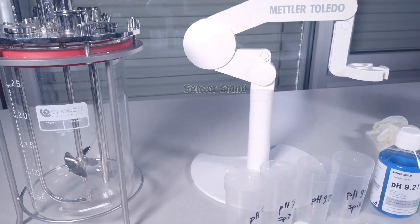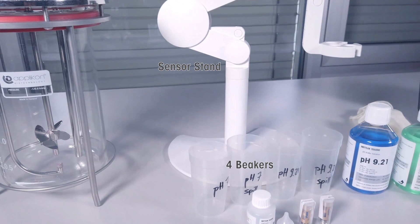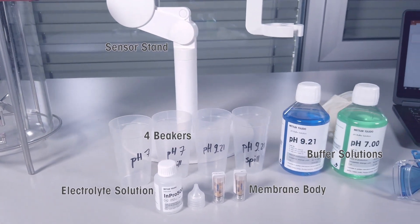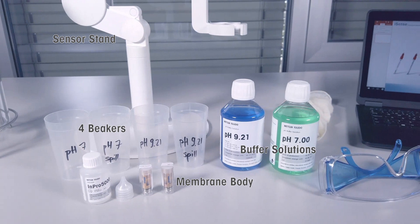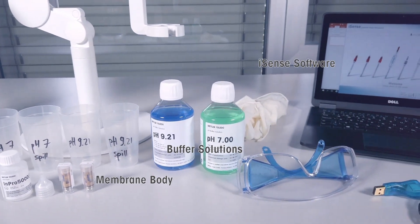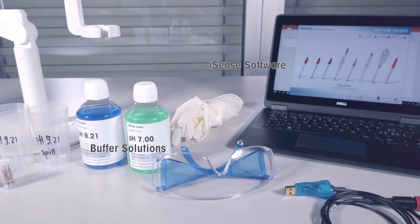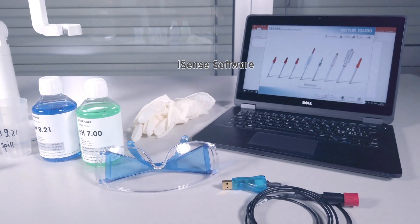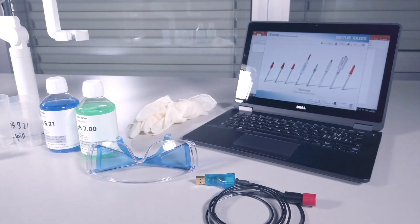To perform maintenance and calibration you will need the following: the supplied electrolyte solution, a new membrane body, Mettler Toledo pH Buffer 7 and 9.21, at least 4 clean beakers, a sensor stand, and Mettler Toledo iSense software or transmitter. In this video we will be using iSense.